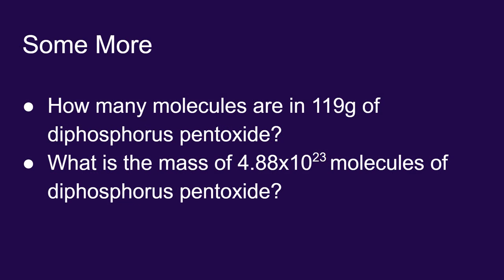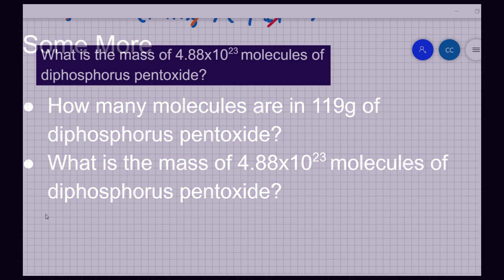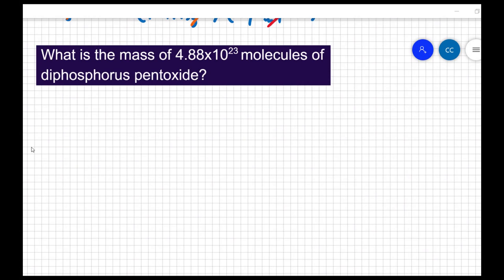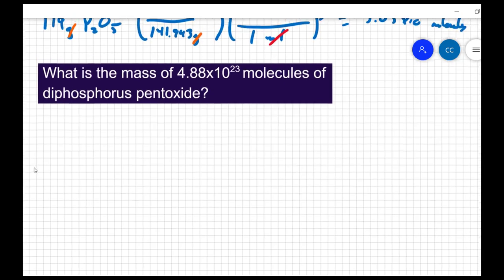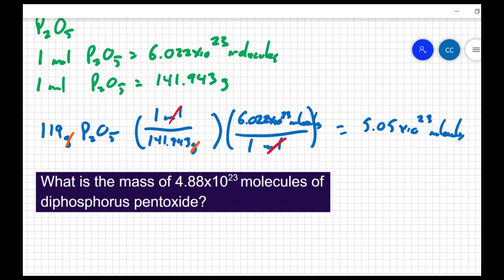Let's do another problem with diphosphorus pentoxide. This time we're given 4.88 times 10 to the 23rd molecules of the compound. And I want to know the mass that will be present. We're using the same compound diphosphorus pentoxide. So we can use the same information that we used in the previous question.